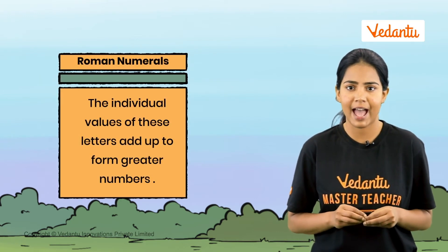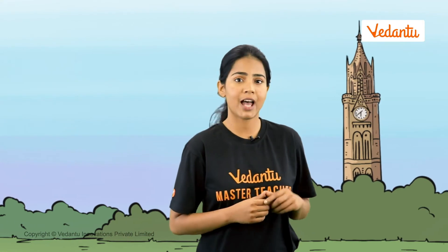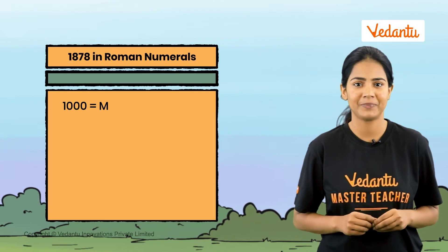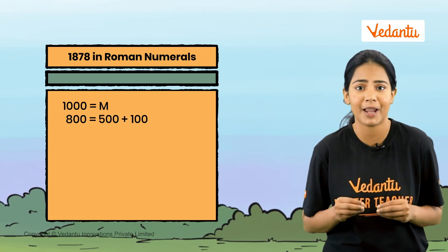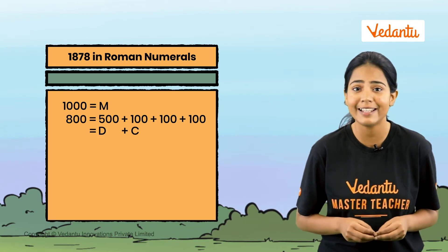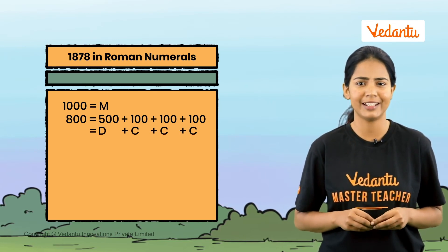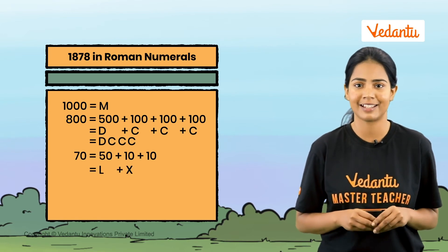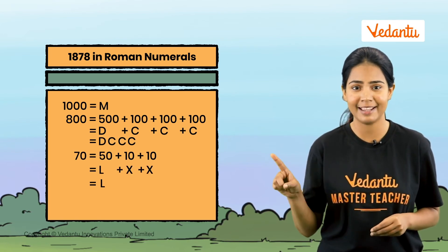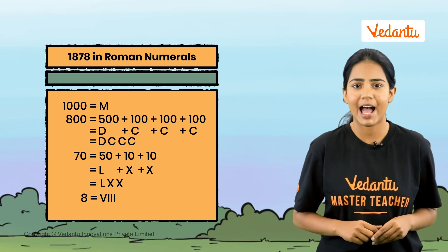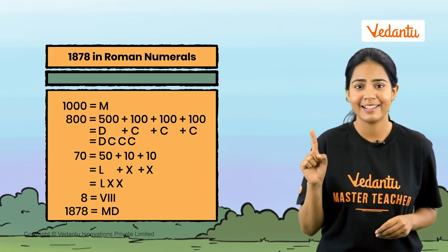The individual values of these letters add up to form greater numbers. The clock tower was built in 1878 — let's convert that into Roman numerals. We represent 1,000 as M. 800 is 500 plus 100 plus 100 plus 100, so it is DCCC. 70 is L plus X plus X, written as LXX. Eight is written as VIII. Adding them all together, 1878 is MDCCCLXXVIII.